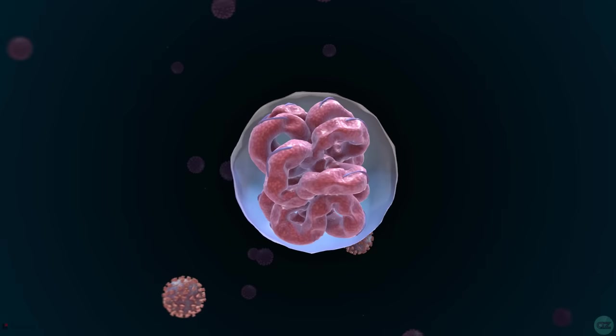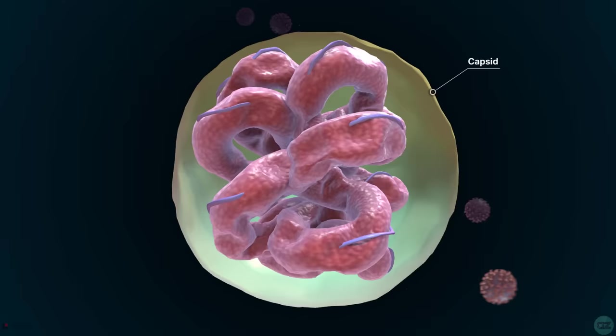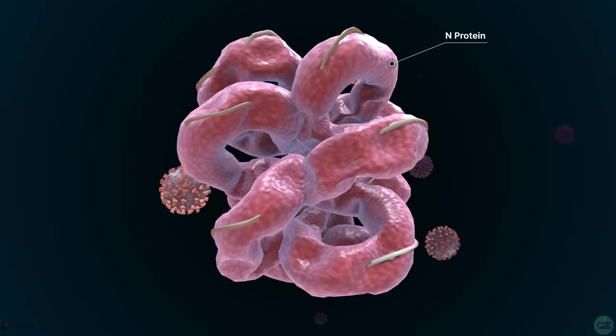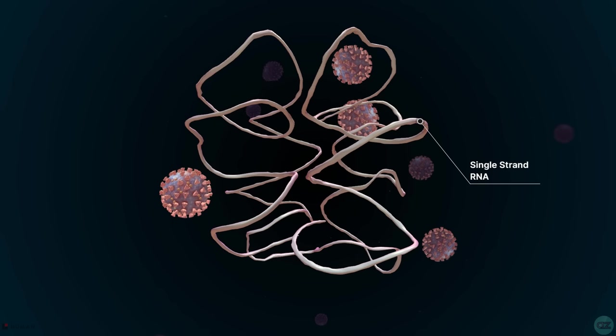Underneath this layer is what's called the capsid. This is a protein shell that encloses the genetic material of the virus. Inside this capsid, we have the nucleocapsid, or N-protein. This protein is bound to the virus's single strand of RNA, which is where all its genetic information is held to allow itself to replicate.